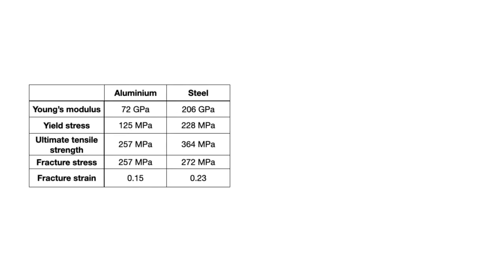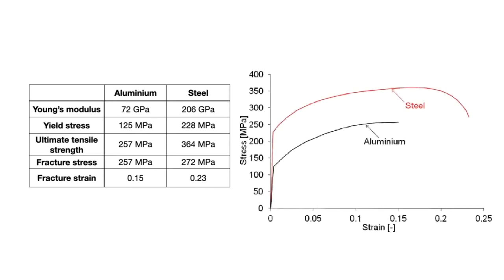Now let's look at this example. Given two types of ductile material, aluminum and steel, the Young's modulus, yield stress, ultimate tensile stress, fracture stress, and fracture strain are all given in this table. Can you plot the stress-strain diagram for both materials? Of course you can. If we plot the stress-strain diagram using the formulas shown earlier, it will look something like this. This is the yield stress point, this is the ultimate tensile strength, and this is the fracture point.